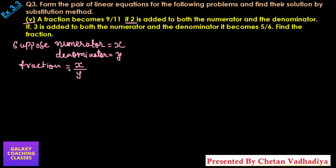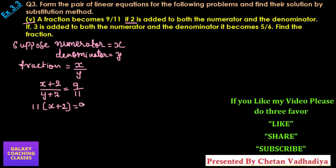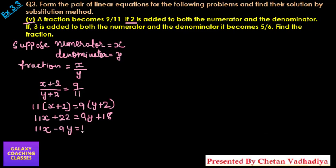We are going to add 2 to both numerator and denominator, so (x + 2) by (y + 2) will give 9 by 11. We can form an equation by cross multiplication: 11 into (x + 2) equals 9 into (y + 2), which gives 11x + 22 = 9y + 18. Rearranging, 11x minus 9y equals minus 4. This is equation number 1.